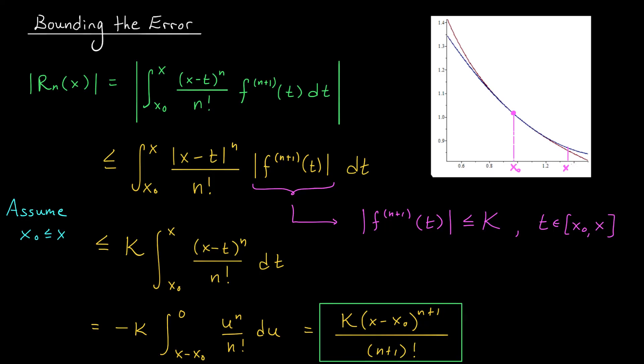And there you go. We have an upper bound for the error in our approximation. Notice that it depends on k, the magnitude of the (n+1) derivative of f, as well as x minus x0, which is really the distance between these two points. The farther away x is from the center of the approximation, the bigger this term will be. And maybe that makes sense.